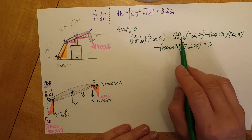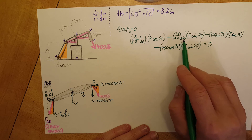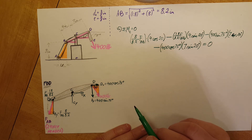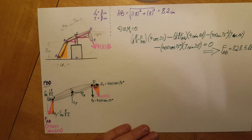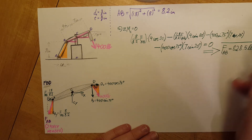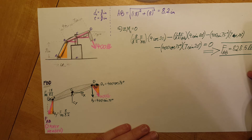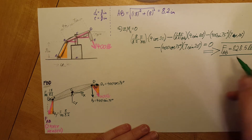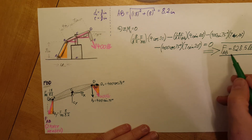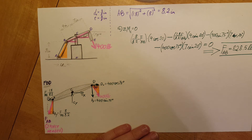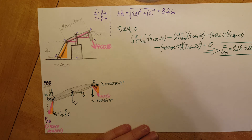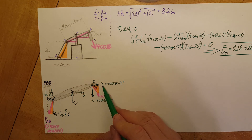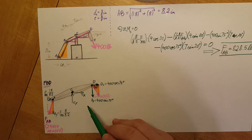From this equation, we know everything except force FAB, so we go ahead and solve for it using the calculator. We now have FAB calculated, and next we need to calculate the remaining unknown forces: DX, DY, CX, and CY.